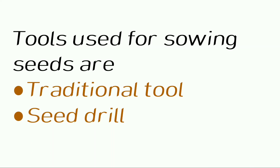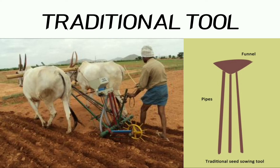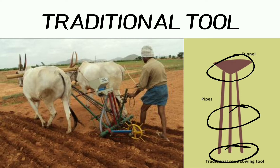Now let us take a look at the tools used for sowing. They are the traditional tool and the modern seed drill. The traditional tool has a funnel at the top where seeds are filled, and these seeds pass down through two or three pipes with sharp ends. These ends pierce into the soil and place the seeds. This method is cost efficient but requires more time and human labor, and does not place the seeds at proper distance.